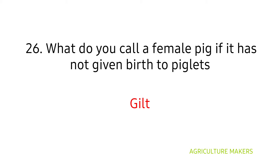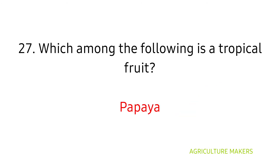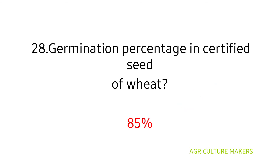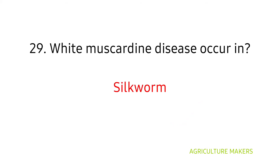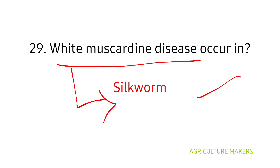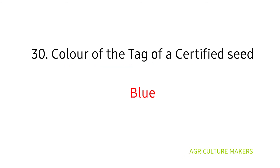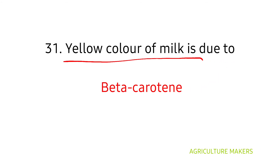A female pig that has not given birth to piglets is called a gilt. Among the following, the tropical fruit is papaya. Germination percentage in certified seed of wheat is 85%. White muscadine disease is one of the important diseases in silkworm. The color of the tag of a certified seed is blue — read the tag colors for other seed classes too. Yellow color of milk is due to beta-carotene; read this for both buffalo and cow milk.